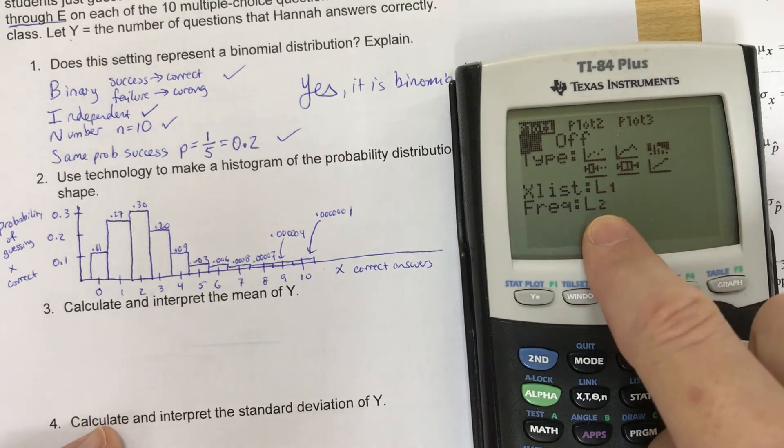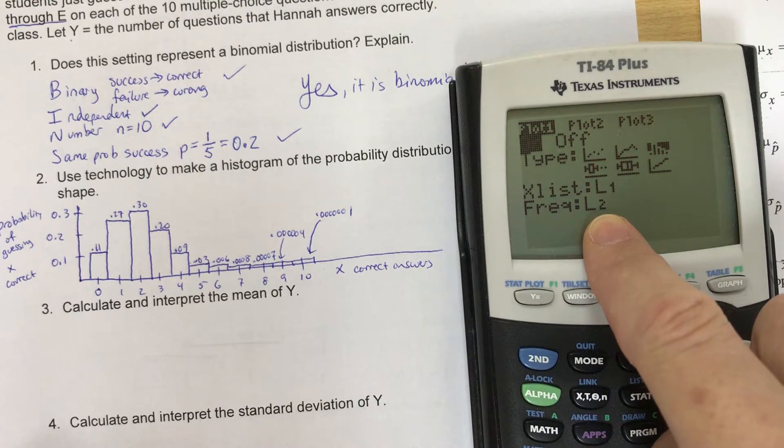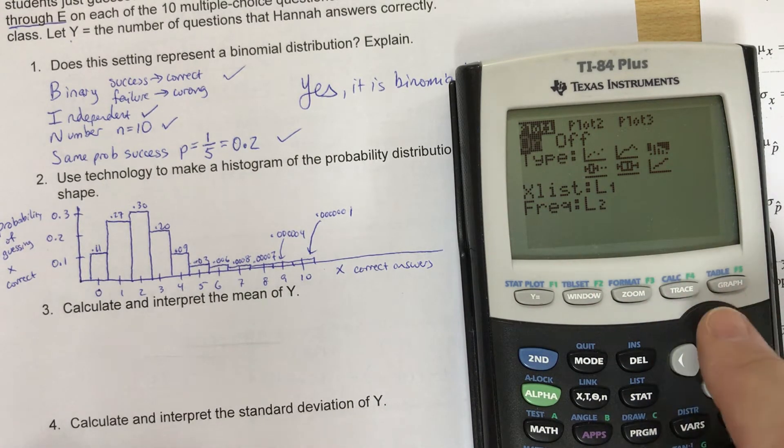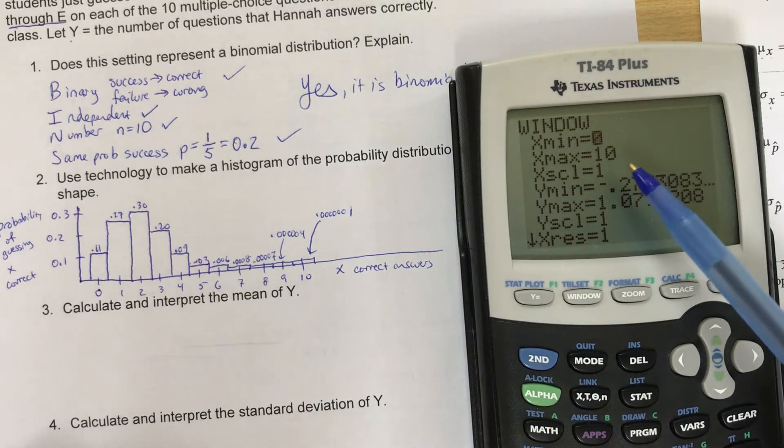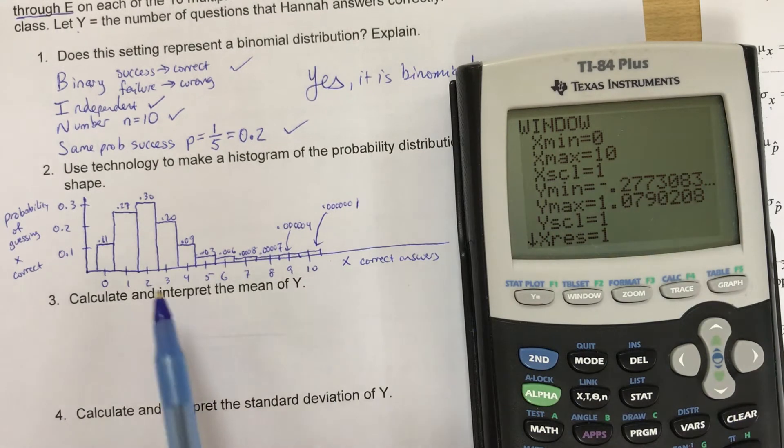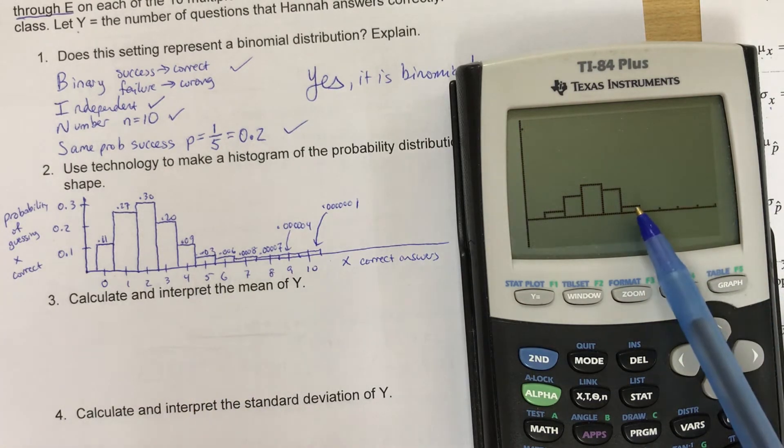I'm using the histogram right there. X list is L1 and the frequency, the probability of getting that is list two. And then in my window, the X scale, each of these is one. Okay, because I can only answer one question, two. It's all integers, three, four, five, six, seven, eight, nine, 10.